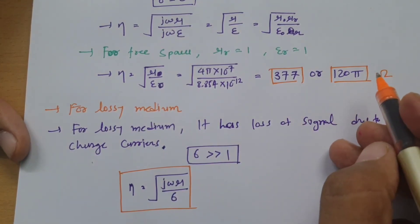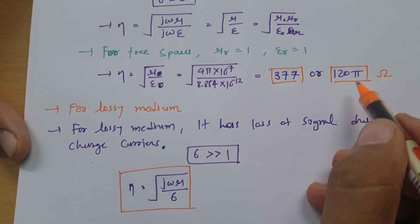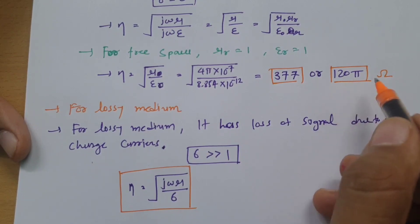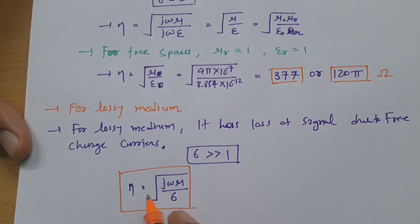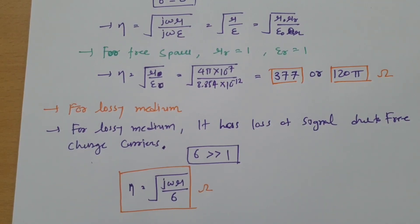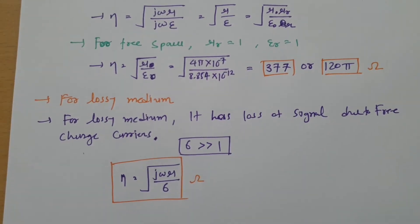For free space or lossless medium, we consider intrinsic impedance as 120π ohms. I hope you have understood this topic. Thank you so much for watching. You can give your valuable suggestions, and I'll make videos to solve your queries. Thank you.